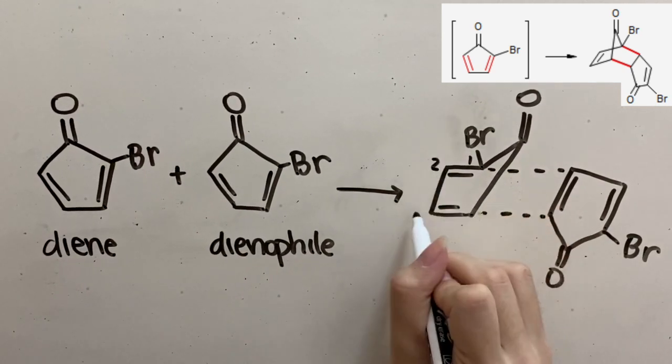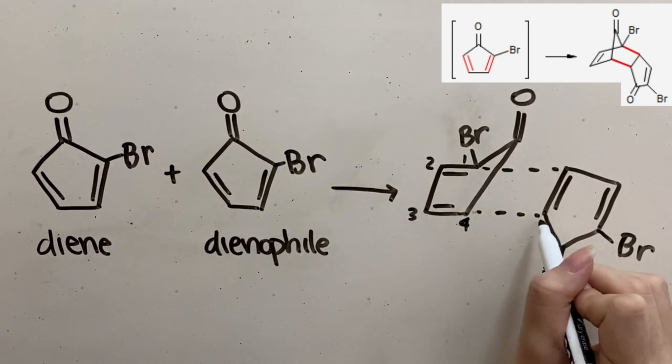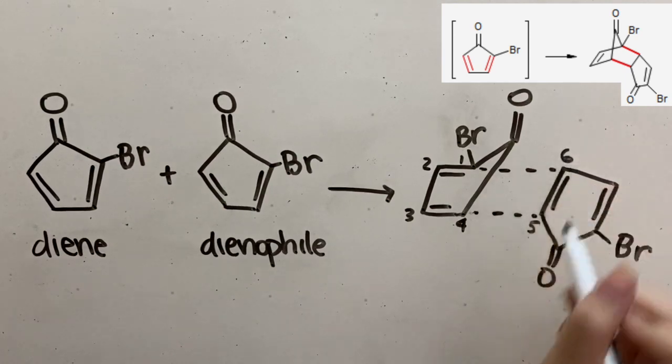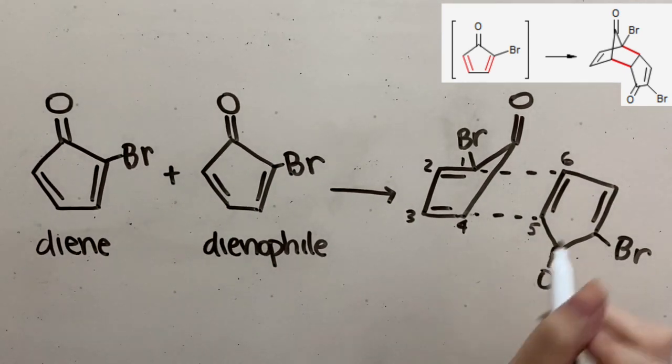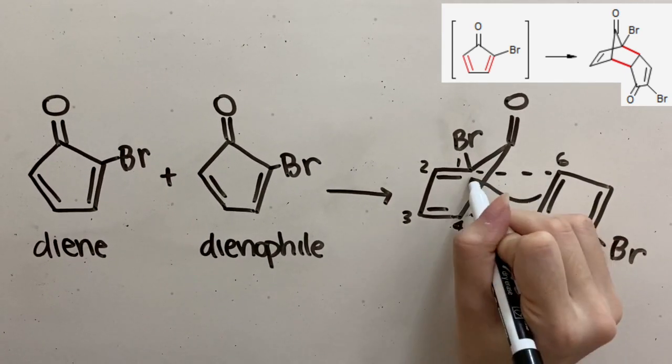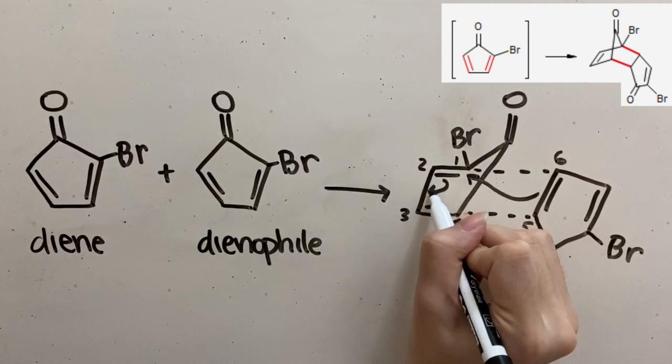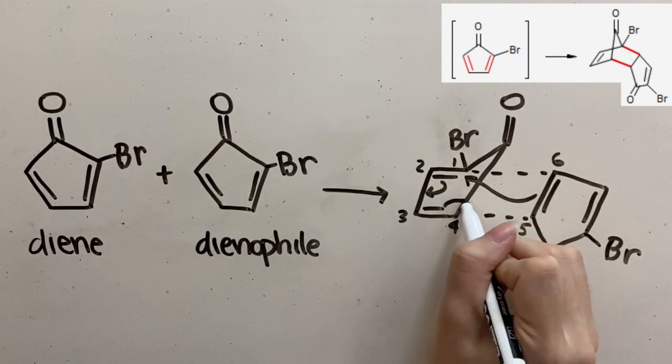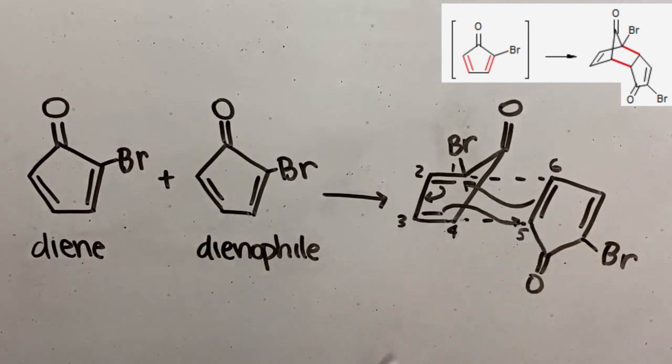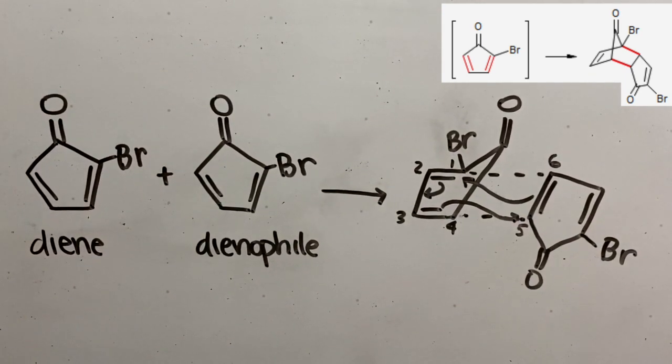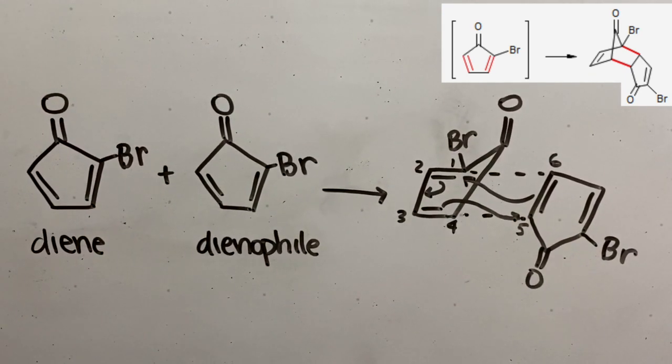Once we number the carbon atoms, we see that a new bond is formed between carbons 1 and 6. The bond between 1 and 2 breaks to form a double bond between 2 and 3. And another bond is formed between the two rings, between carbons 4 and 5.